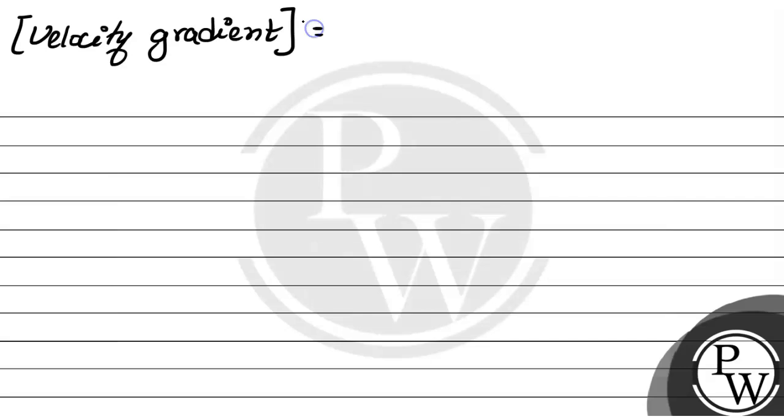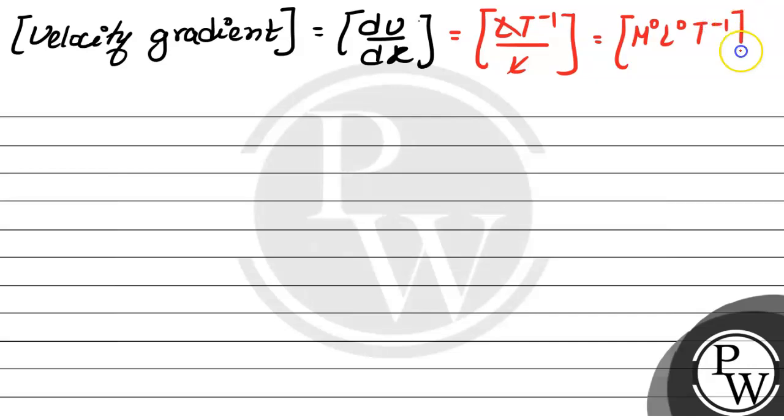The dimension of velocity gradient will be the dimension of dV/dX. Change in velocity has the same dimension as velocity, which is LT to the power minus 1, and dX is change in length, so that's the dimension of length. L will cancel out, so velocity gradient's dimension is M^0 L^0 T^-1.